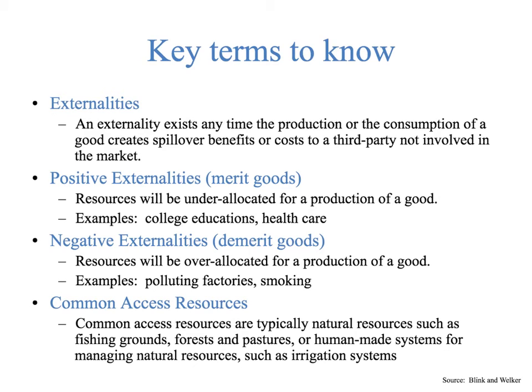Positive externalities, or merit goods, are resources that will be under-allocated for the production of a good. Examples of that are college education and healthcare. If I'm healthy, the healthier I am, the less likely I am to make someone else sick. And the more highly educated I am, the more likely I am to be a productive member of society. So those are positive externalities, and they're called merit goods.